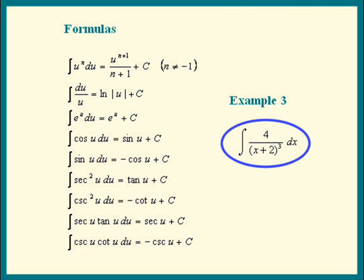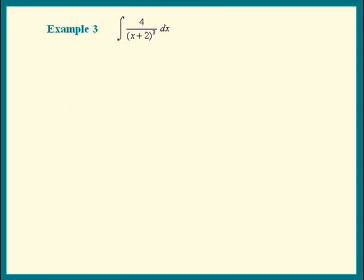Do you all recognize that this is a power rule problem? That's right. We're going to try the power rule because 1 over x plus 2 cubed is x plus 2 to the negative third power. We might as well write the integral that way first. The integral can be written as: pull out the 4, times the integral of x plus 2 to the negative third power.